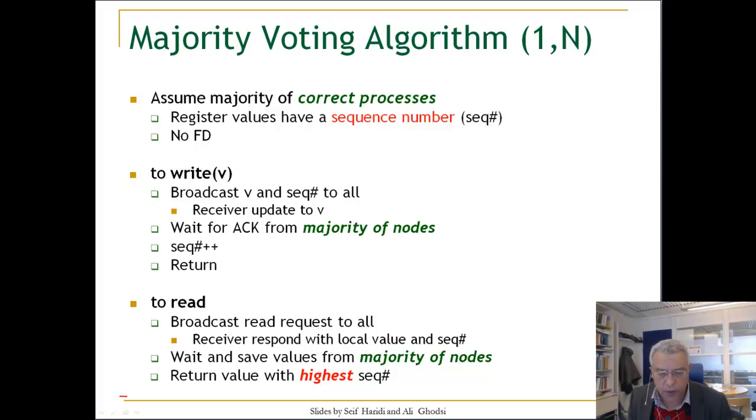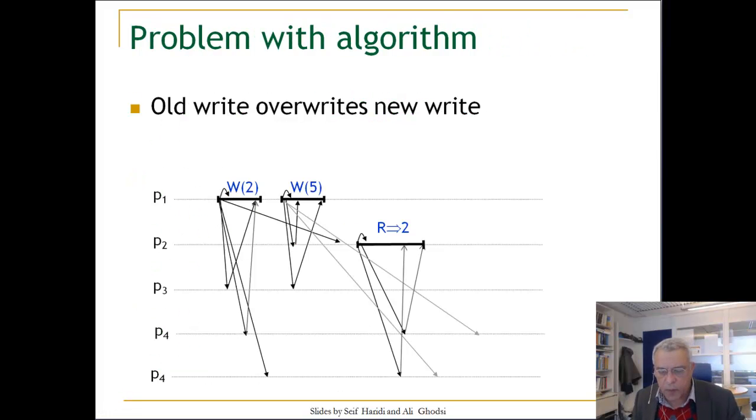This algorithm is almost right, but it has a slight problem. The problem with this algorithm is that old writes may overwrite new writes. Here is one execution that shows this. We have five nodes in the system. For a node to complete an operation, it needs three acknowledgments. The write initiated by P1 completes here. It got an acknowledgment from itself, from P3—P3 has value 2 now here—and from P4. P4 has value 2. But the broadcast message to P2 is taking time. It will arrive at this point.